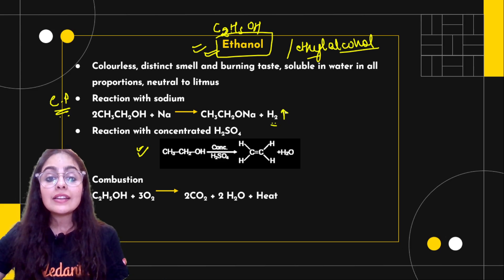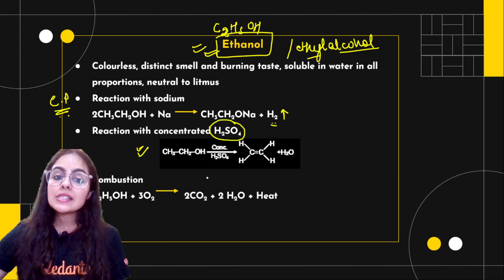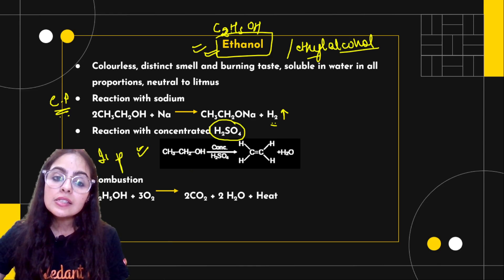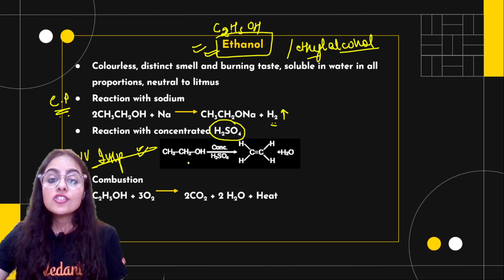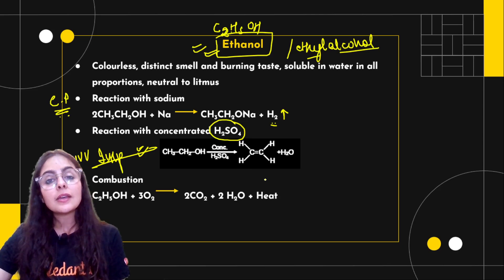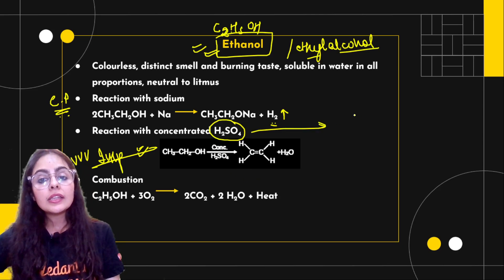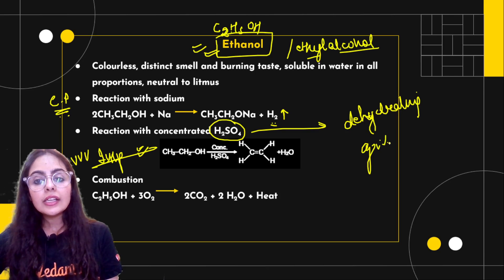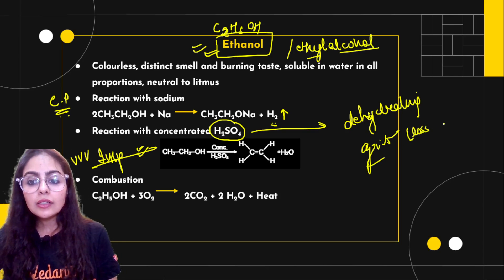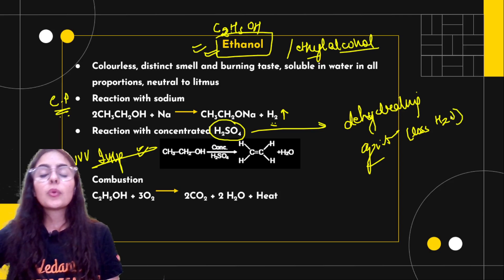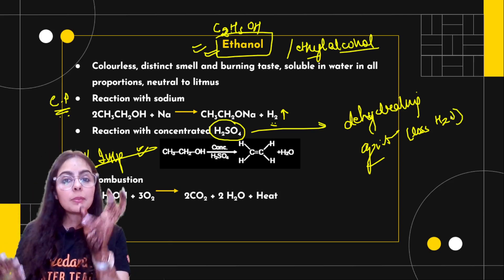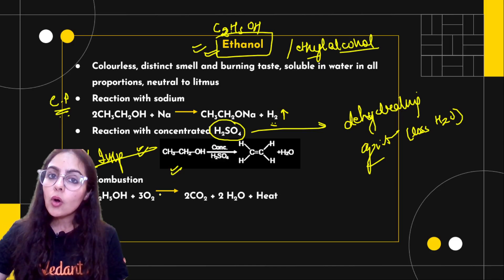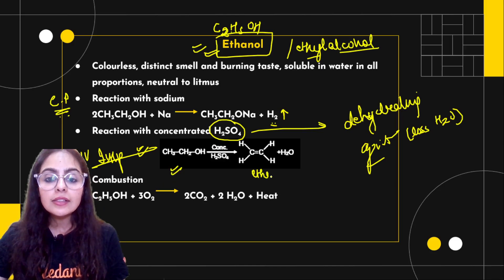The most important reaction of ethanol is the dehydration reaction, where concentrated sulphuric acid acts as a dehydrating agent. Dehydration means loss of water — the sulphuric acid removes water from ethanol. So ethanol converts to ethene in the presence of concentrated sulphuric acid.